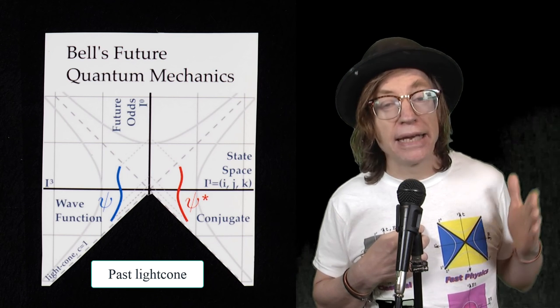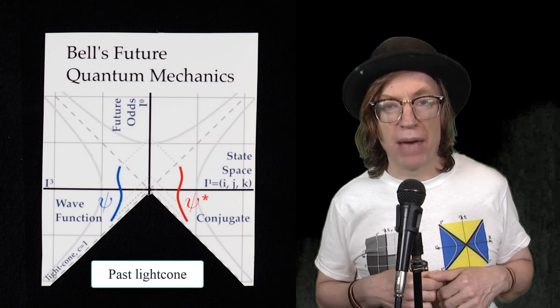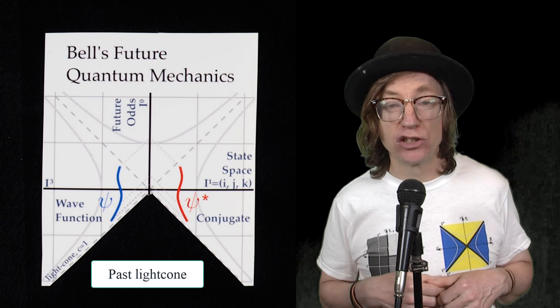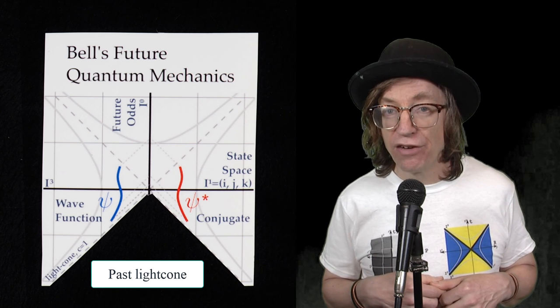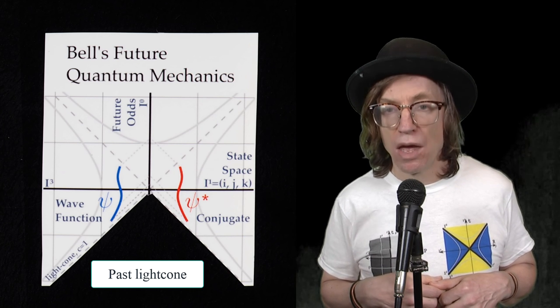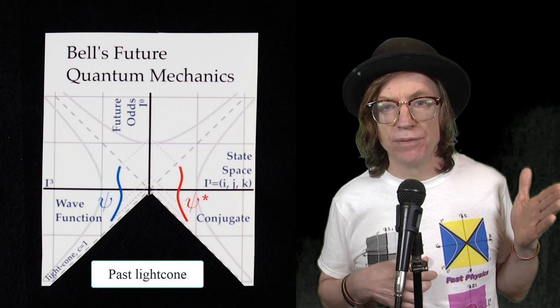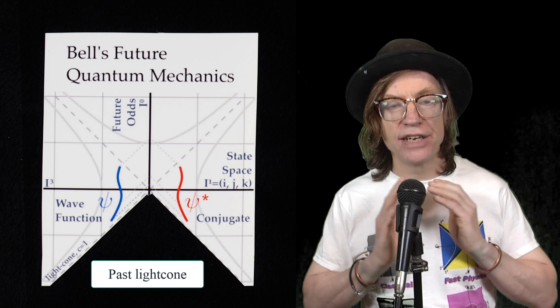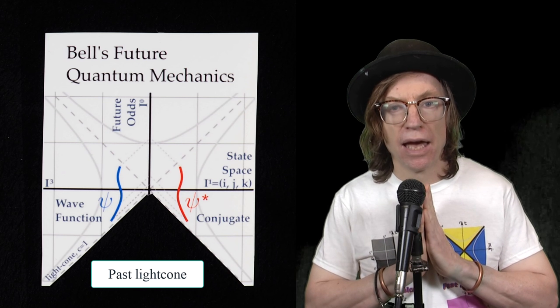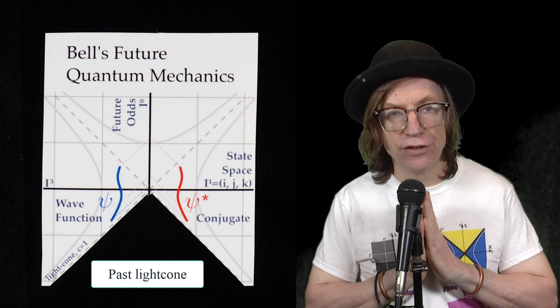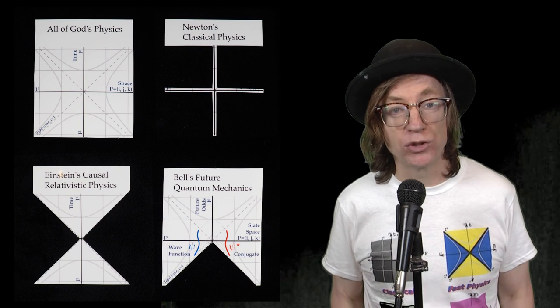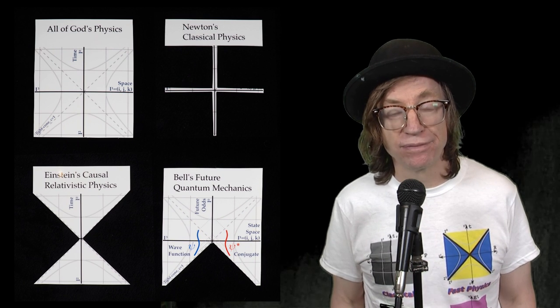Quantum mechanics has always been about the odds of an interaction happening to the observer in the future. So the product of the wave function and its conjugate form the odds of an interaction happening to the observer in the future. And that is Bell's future quantum mechanics. Thank you.